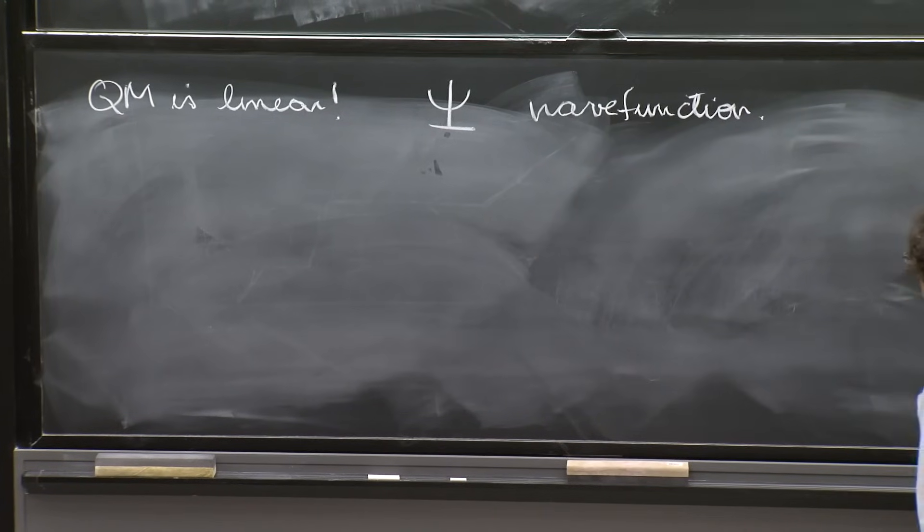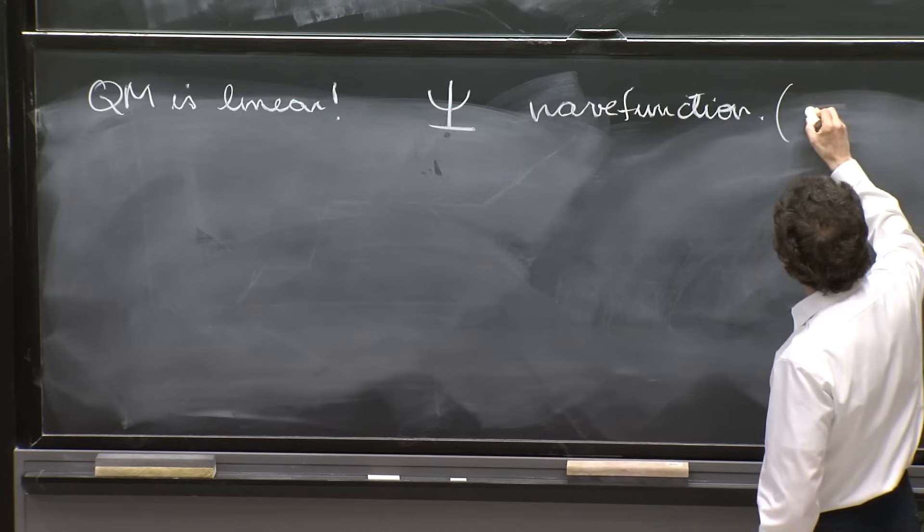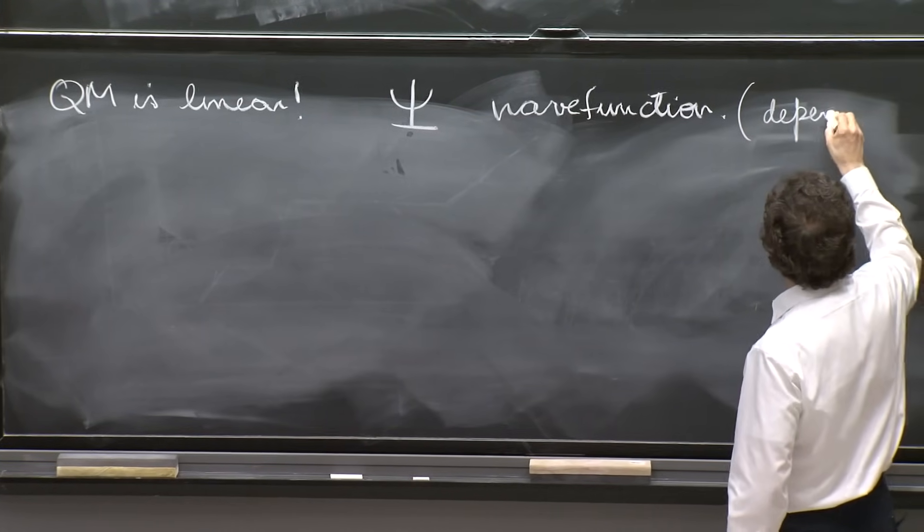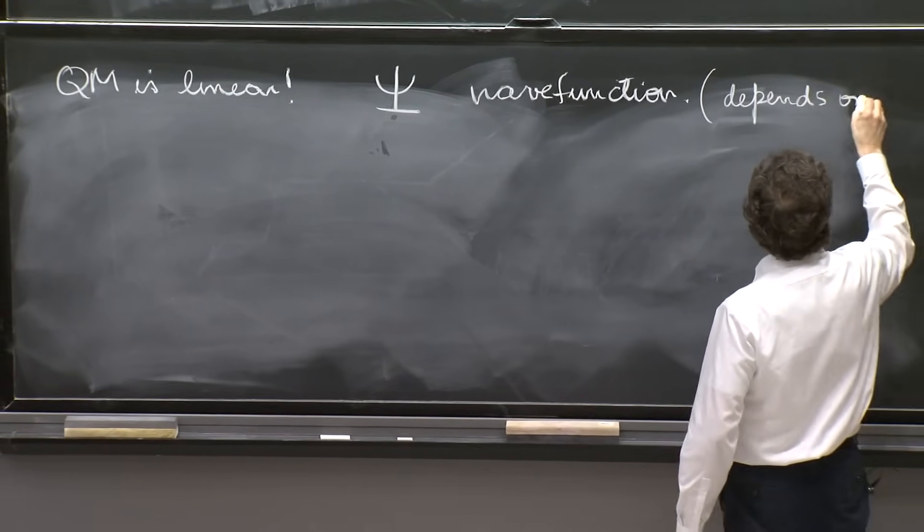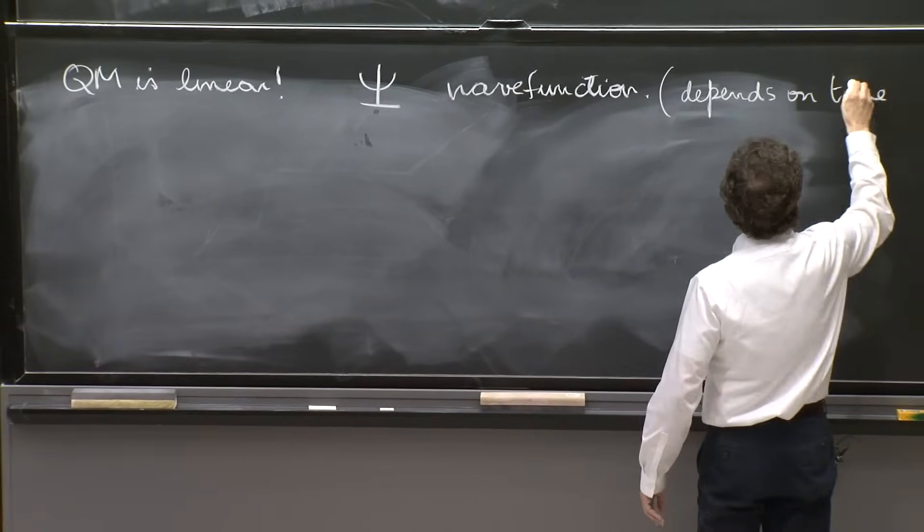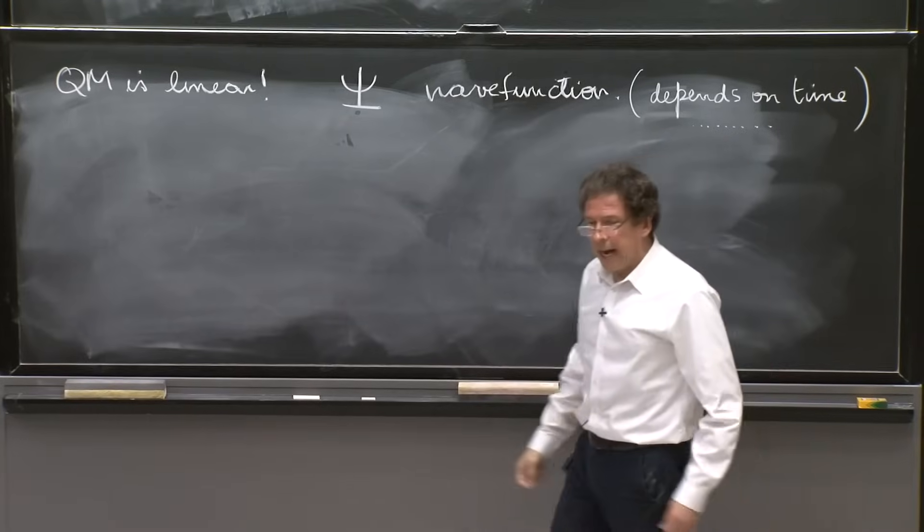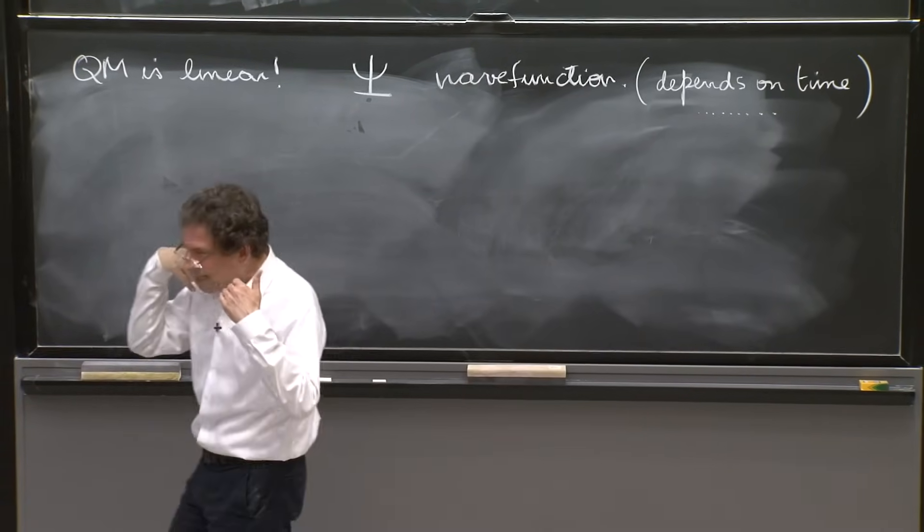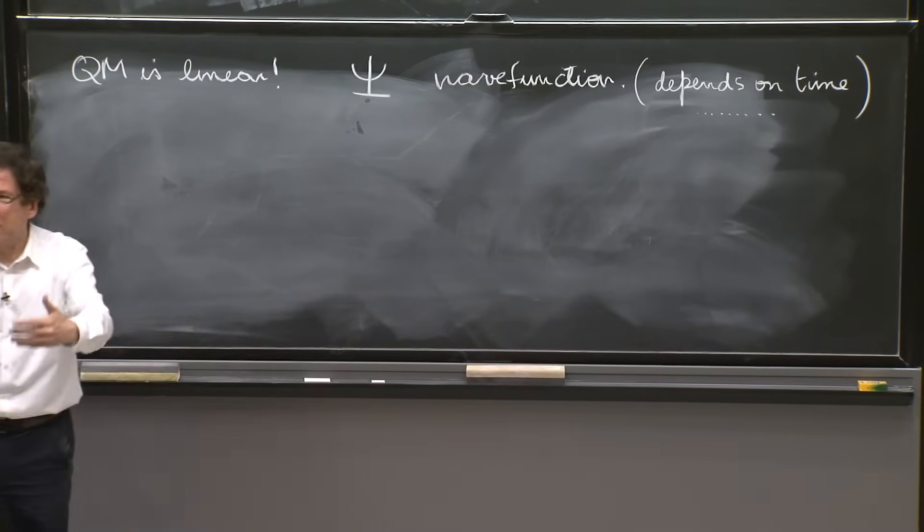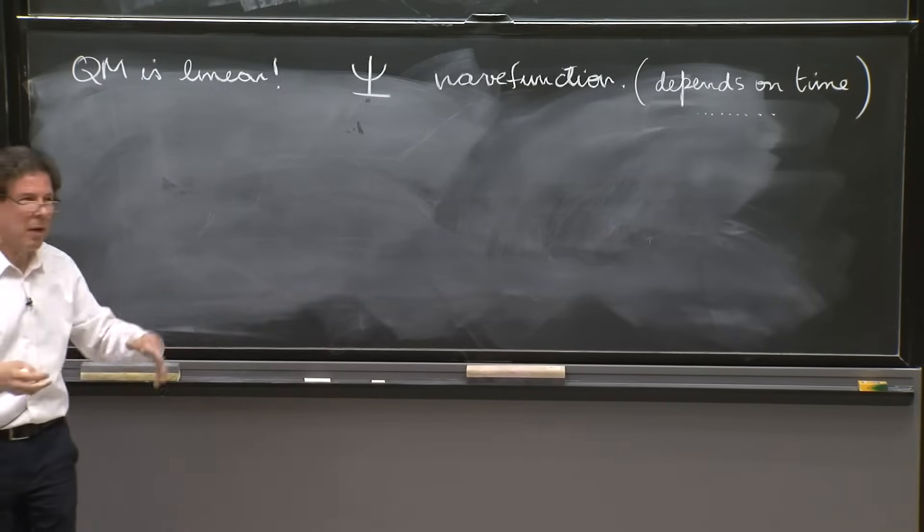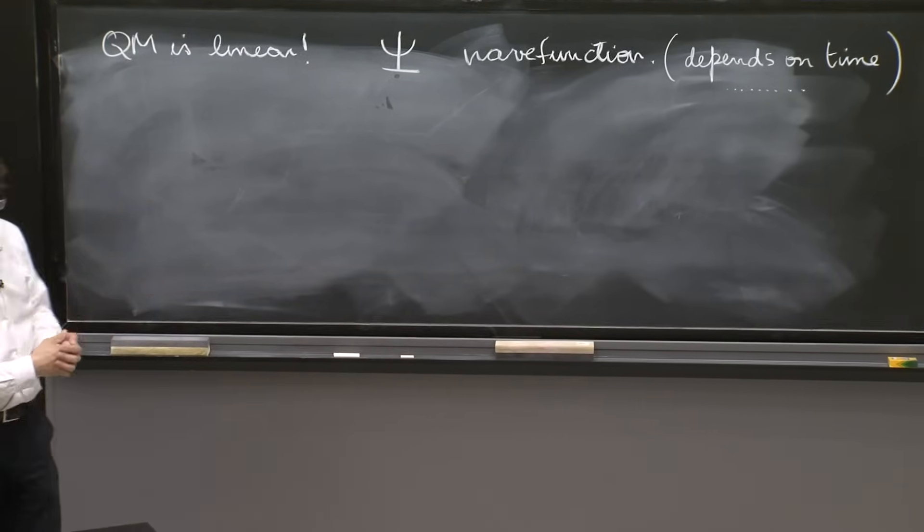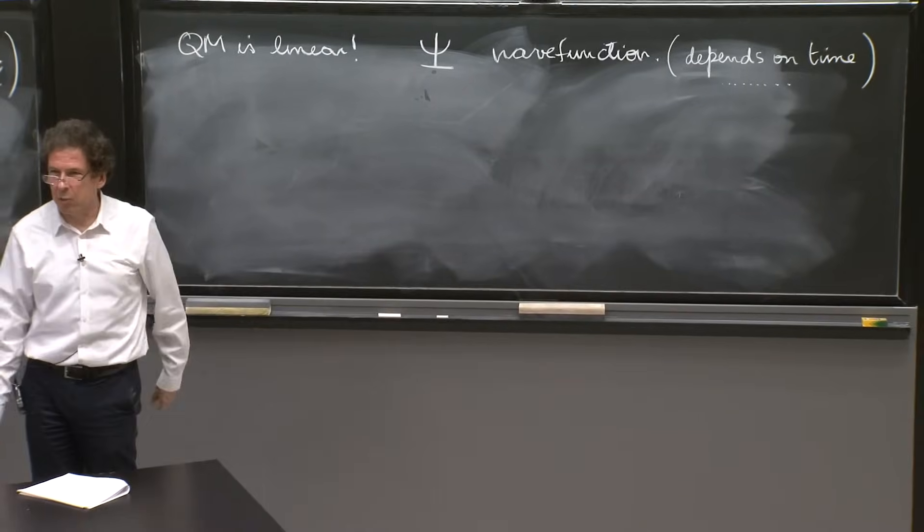This wave function can depend on t. It depends on time. And it may depend on other things as well. And it describes the dynamics of the quantum system as it evolves in time. There is the wave function. And you have an equation for this wave function.